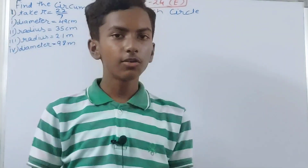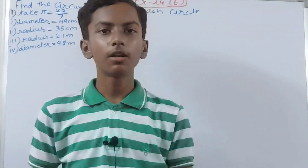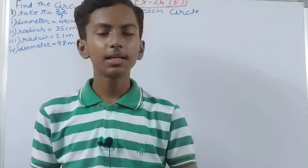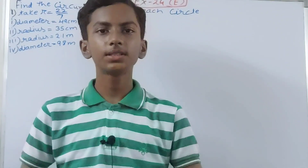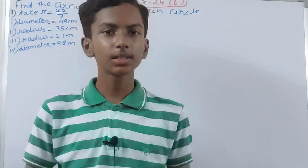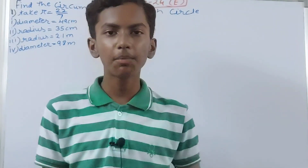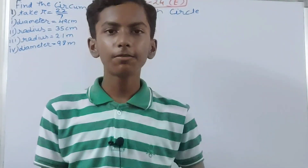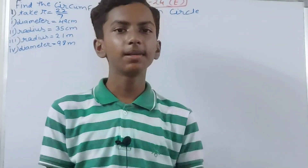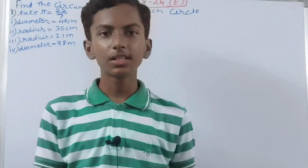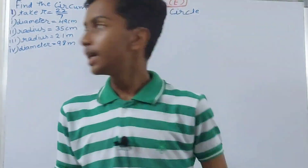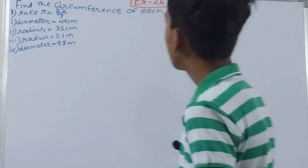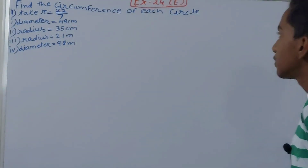Hello friends, welcome back to my YouTube channel 'Unlock Your Learning'. In this video we are going to solve ICC Mathematics Class 7th, Chapter 24: Area and Perimeter, Exercise 24, Question 1 — find the circumference of each circle.